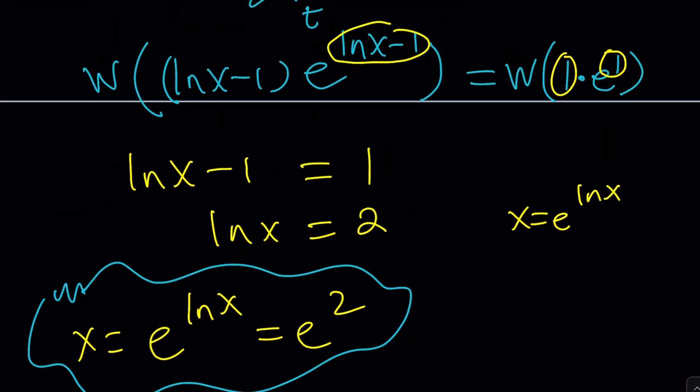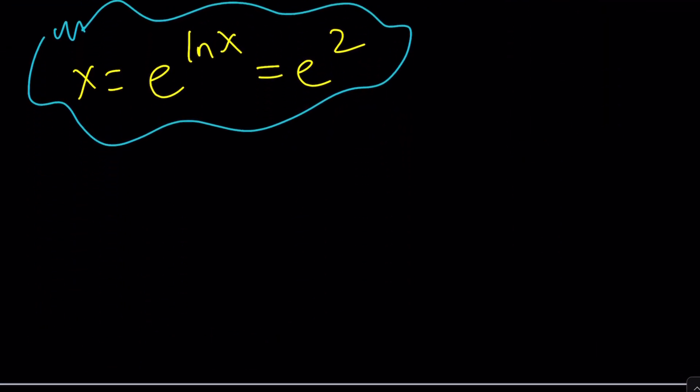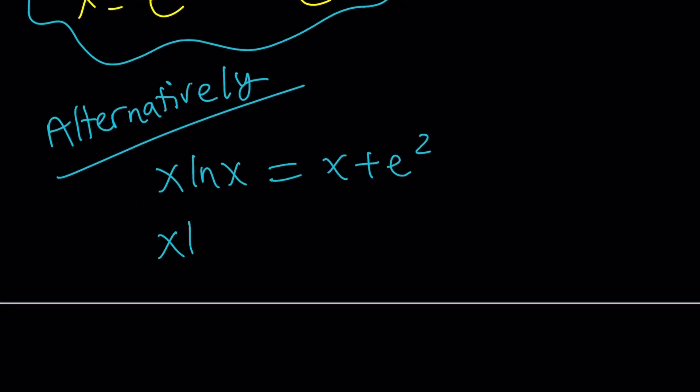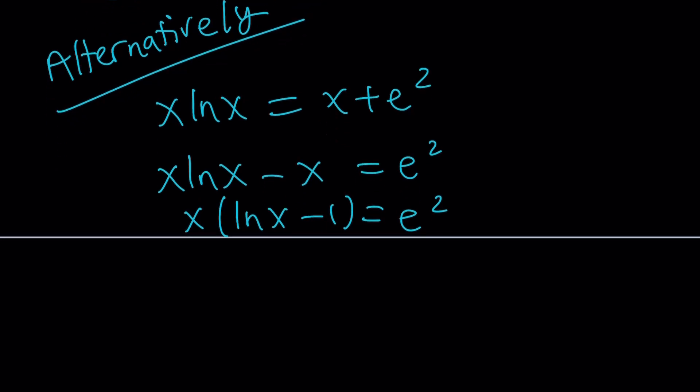Let's go ahead and take a look at the alternative method. If you want, you can call it second method. But I'm just going to call it alternatively. And then at the end, I'm going to share with you a graph. So, first of all, I'm going to do the same thing. Subtract x. And then factor out x. Same thing so far.